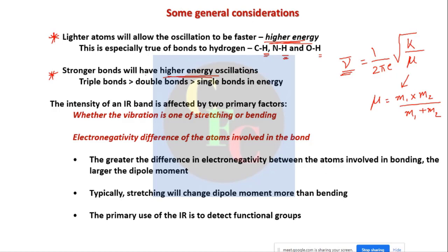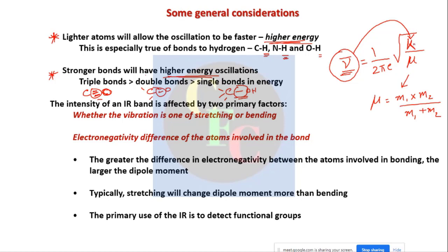Stronger bonds have higher energy of oscillation. For similar atoms, taking carbon-carbon bonds: the triple bond will vibrate at higher frequency than the double bond, which vibrates at higher frequency than the single bond. This is because frequency is directly proportional to the square root of the spring constant k, which depends on bond strength. Triple bonds are much stronger than double bonds, which are stronger than single bonds.